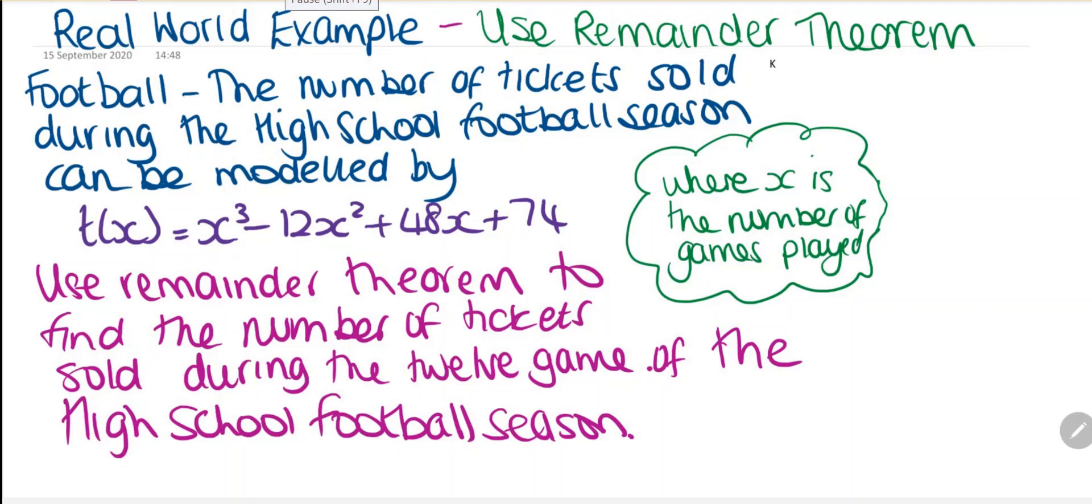OK, so we have a real world example problem and we're using the remainder theorem. We're given the question: football - the number of tickets sold during the high school football season can be modeled by the following equation t(x) = x³ - 12x² + 48x + 74, where x is the number of games played.